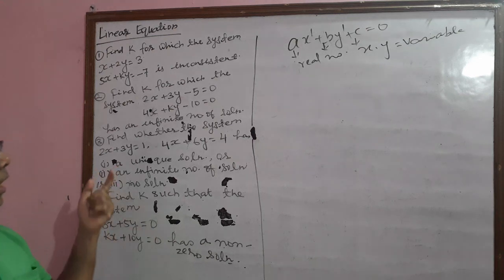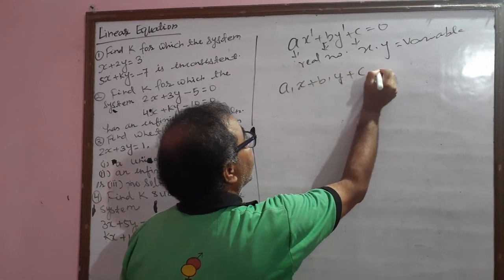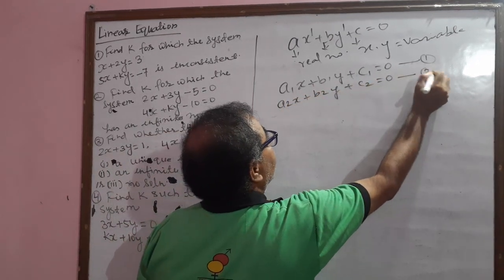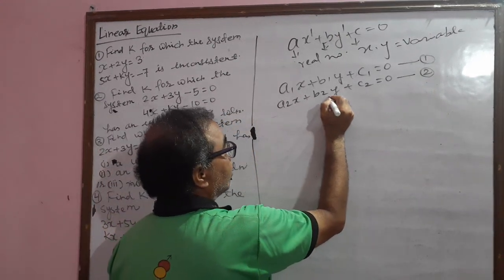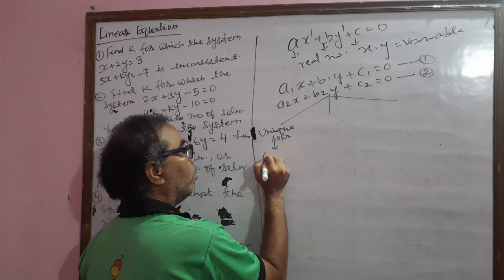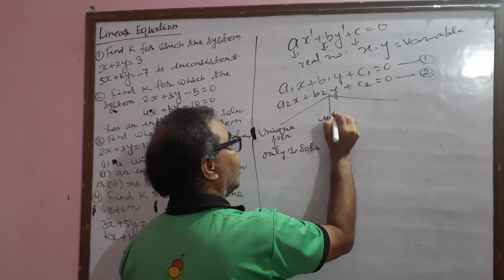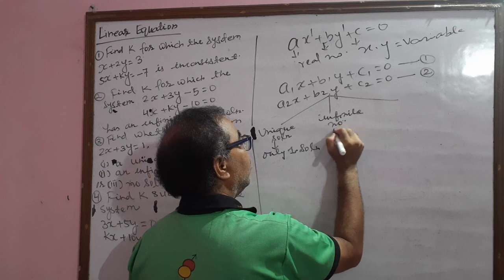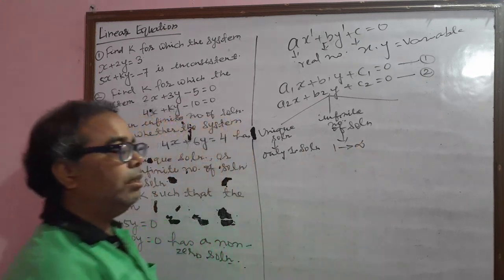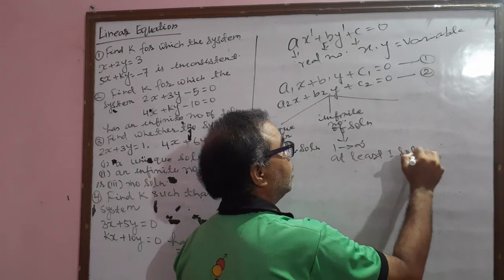What are the results we are getting? If two equations are given — suppose a1x plus b1y plus c1 equal to 0 is equation 1, and a2x plus b2y plus c2 equal to 0 is equation 2 — out of these we get three kinds of solutions. First, we get a unique solution, meaning only one solution. Second, we get an infinite number of solutions. Third, there is no solution.